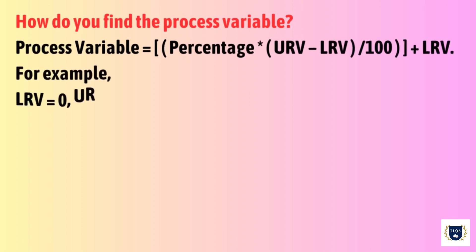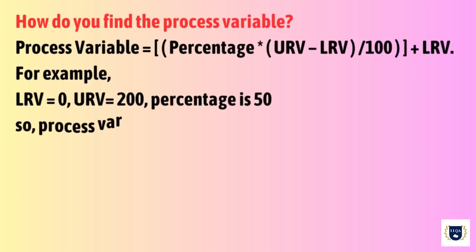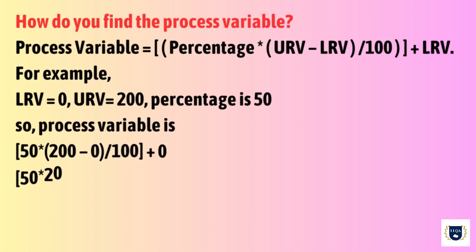How do you find the process variable? Process variable equals percentage asterisk URV minus LRV, divided by 100, plus LRV.